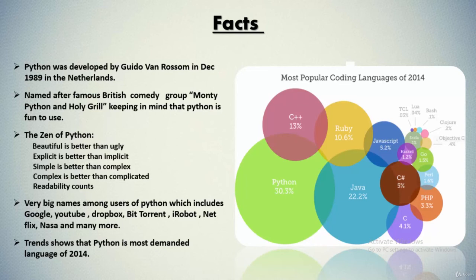Very big names among Python users include Google, YouTube, Dropbox, BitTorrent, iRobot, Netflix, NASA, and many more. Trends show that Python was the most demanded language of 2014. Looking at the chart, Python grabbed approximately 30.3 percent of demand, making it the most popular coding language of 2014.